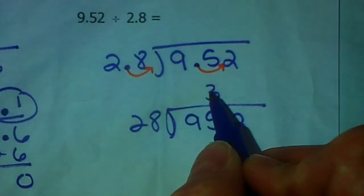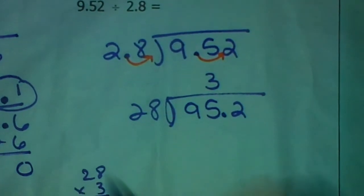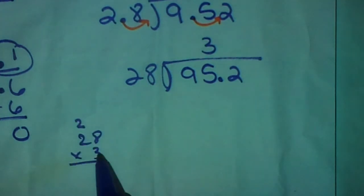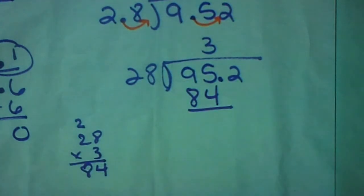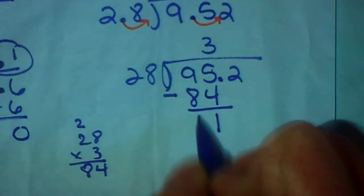All right. We need to take 28 times 3. So really, it's kind of like we're doing this problem right here. So 8 times 3 is 24. I'm going to carry my 2. 3 times 2 is 6. Plus 2 is 8. So 28 times 3 is 84. I'm going to subtract. 5 minus 4 is 1. 9 minus 8 is 1.